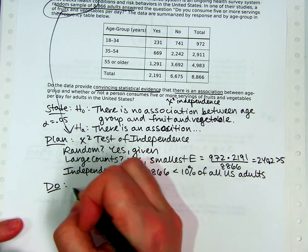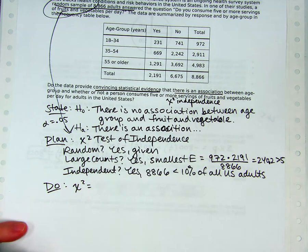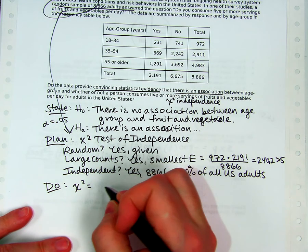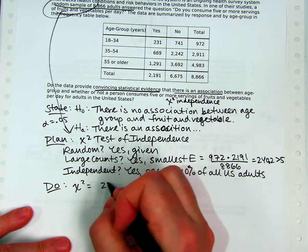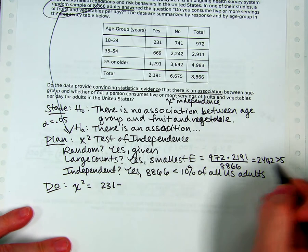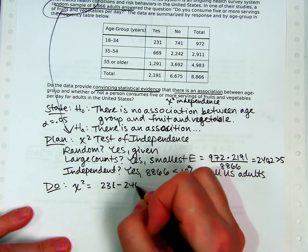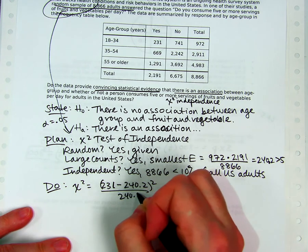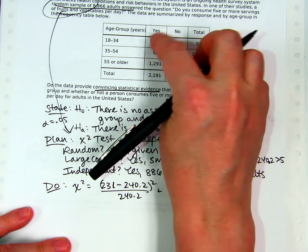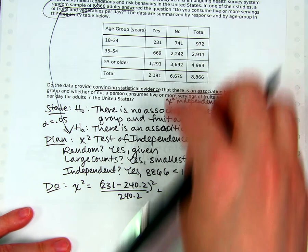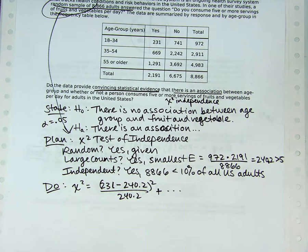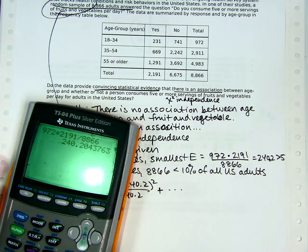So once again we want to find chi-squared. We want to do the observed minus expected thing. I'm going to do the first one. 231 minus this 240.2 that I just found, squared over 240.2. And then we would do 1, 2, 3, 4, 5, 6's. Then we get to do five more of these. And I'm just going to put the dot dot dot because I want to jump to the calculator thing.